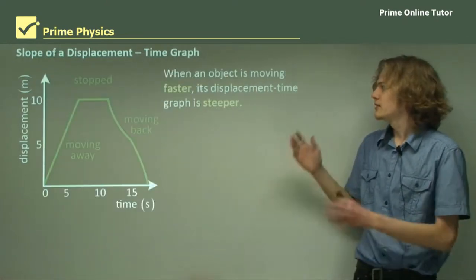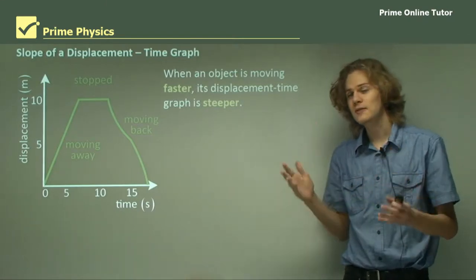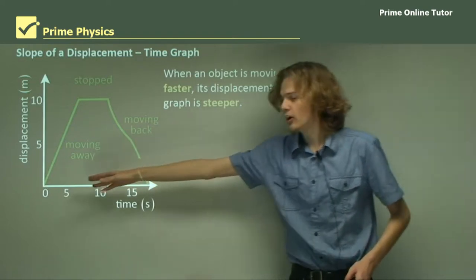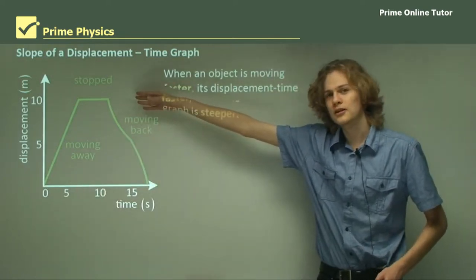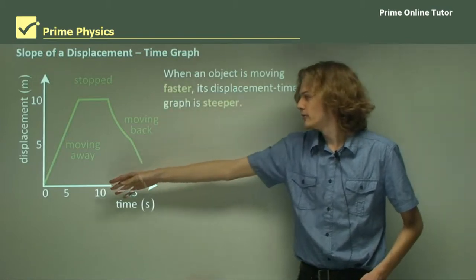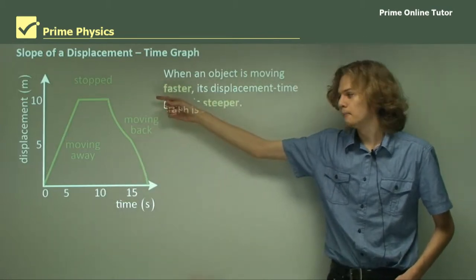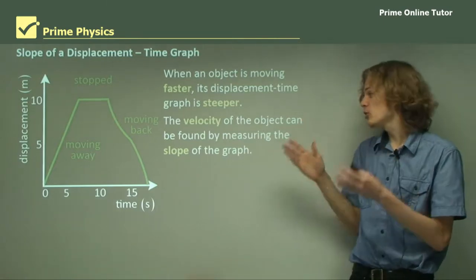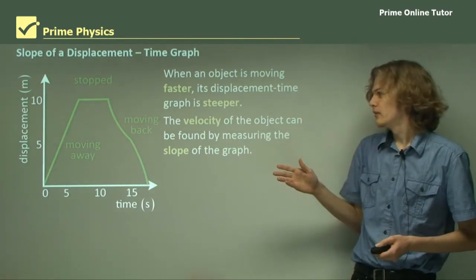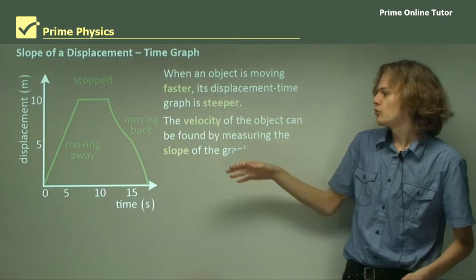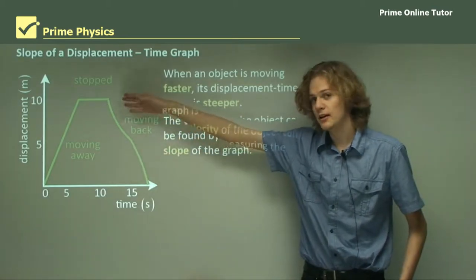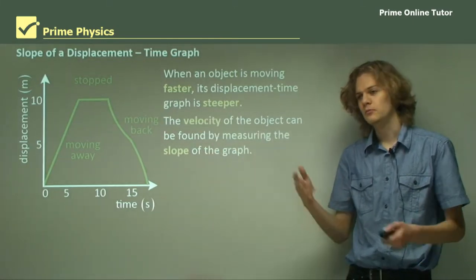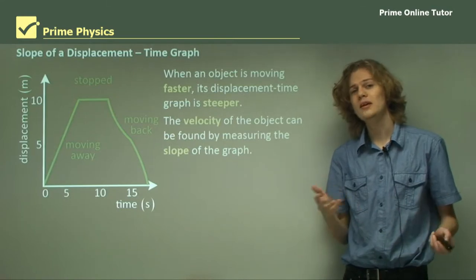Now, when an object is moving fast, its displacement graph gets steeper. We can see in this graph that the object starts off at zero and moves very quickly toward a displacement of 10 meters, getting there in just five seconds. The velocity of the object can be found by measuring the slope of the graph, which is rise over run. So if we take the rise of 10 meters and divide it by the run of five seconds, we get its velocity — 10 divided by five means it's two meters per second.